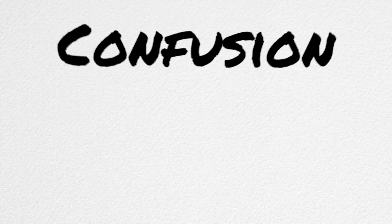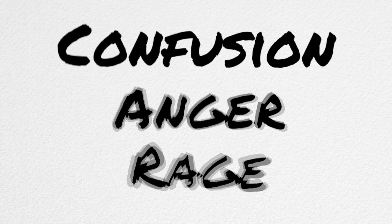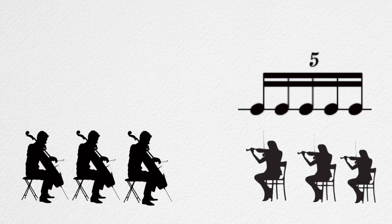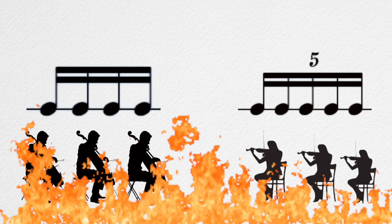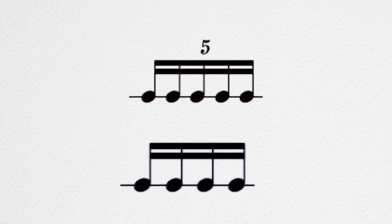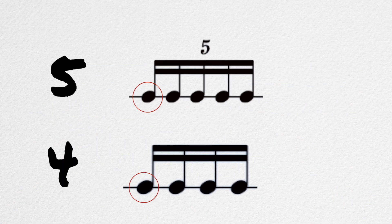If you want to create confusion, anger, and rage at your next ensemble rehearsal, just ask one group of players to play quintuplets and the other to play 16th notes, and then bask in the chaos. Of course, playing quintuplets against 16ths creates a 5 over 4 polyrhythm.